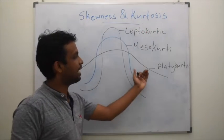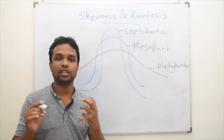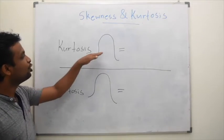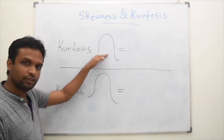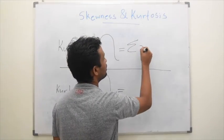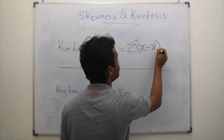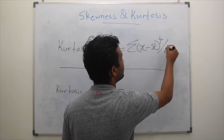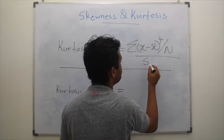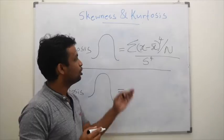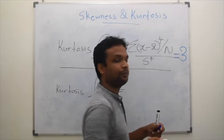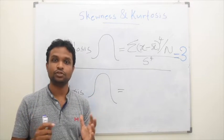Leptokurtic, mesokurtic and platykurtic. How do we give a value for kurtosis? Kurtosis for normal distribution, we get using the formula of summation (x minus x-bar) to the power 4 divided by n, divided by standard deviation to the power 4. So the value for normal distribution will be 3. The kurtosis for normal distribution is 3.